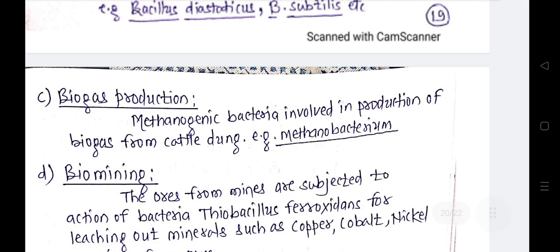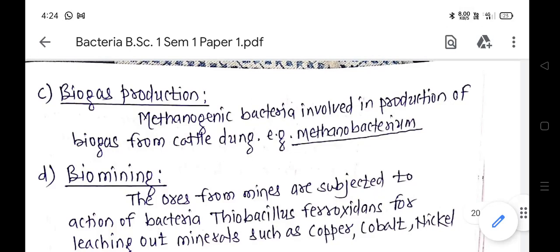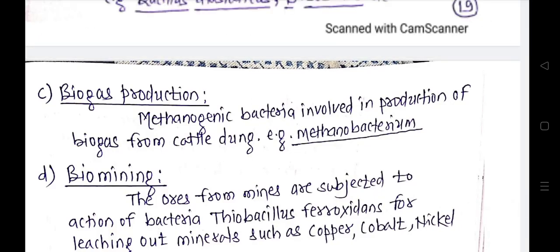Bacteria are also very important in biogas production. Methanogenic bacteria are involved in the production of biogas from cattle dung. An example is Methanobacterium.